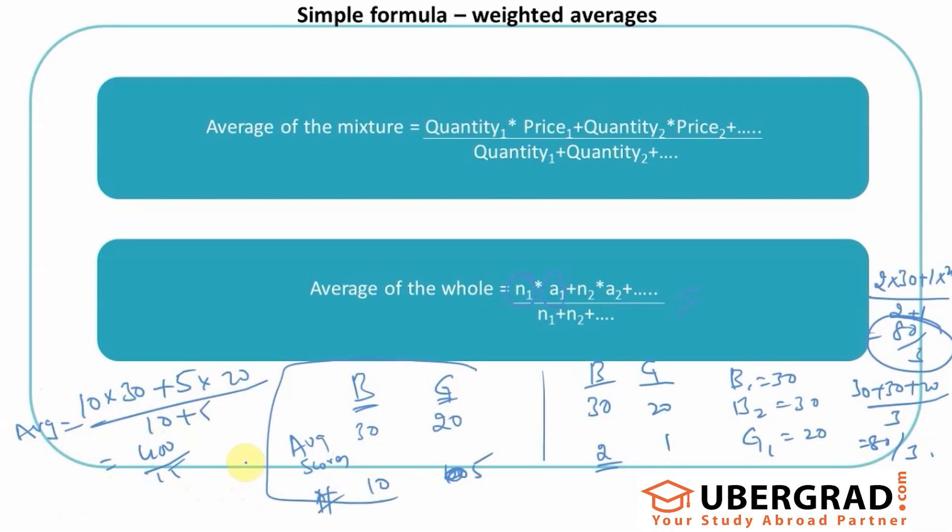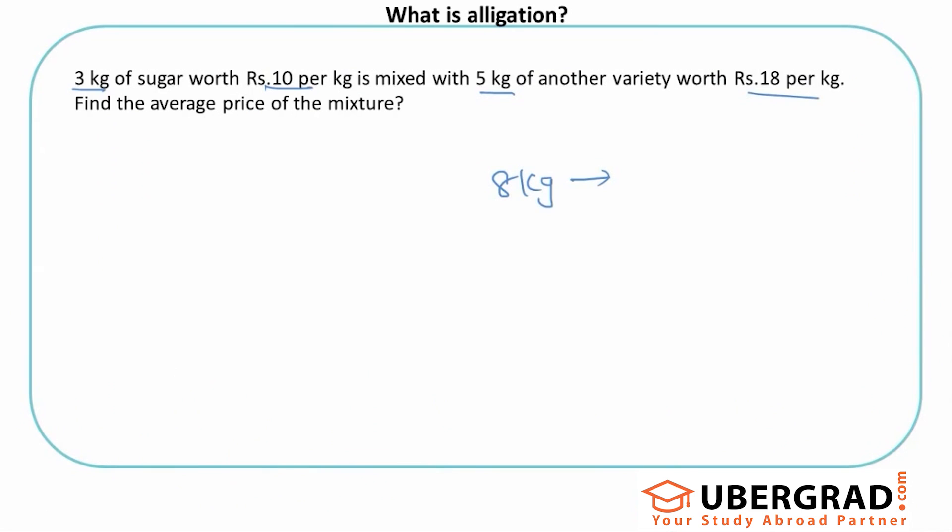You see, this looks like averages only, right? I should use the same technique to solve this question also. Let's look at this. Three kgs of sugar, and each kg is 10 rupees, that's the first type.